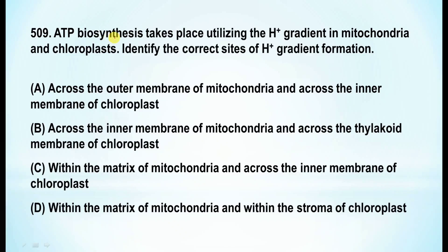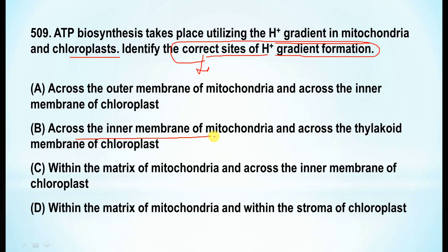Question 509: ATP biosynthesis takes place utilizing the proton gradient in mitochondria and the chloroplast. Identify the correct sites of proton gradient formation. The correct answer is that the proton gradient forms across the inner membrane of the mitochondria and across the thylakoid membrane of the chloroplast.